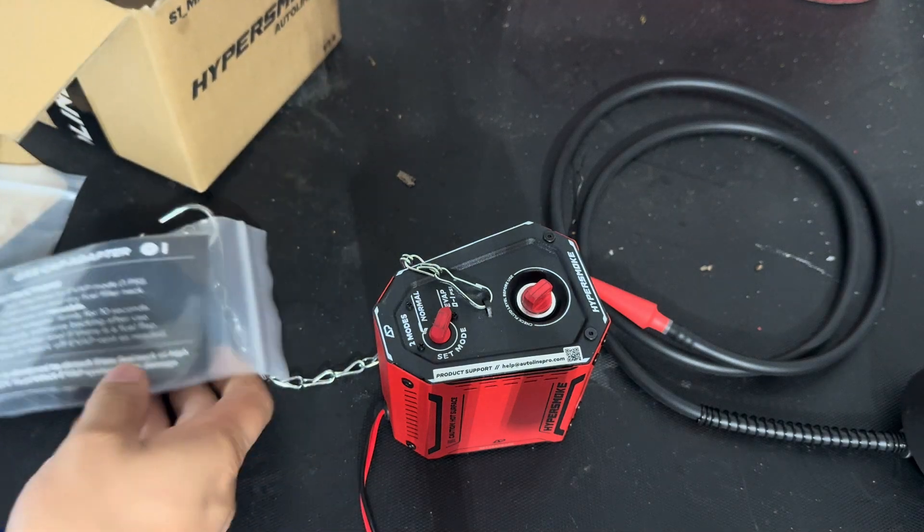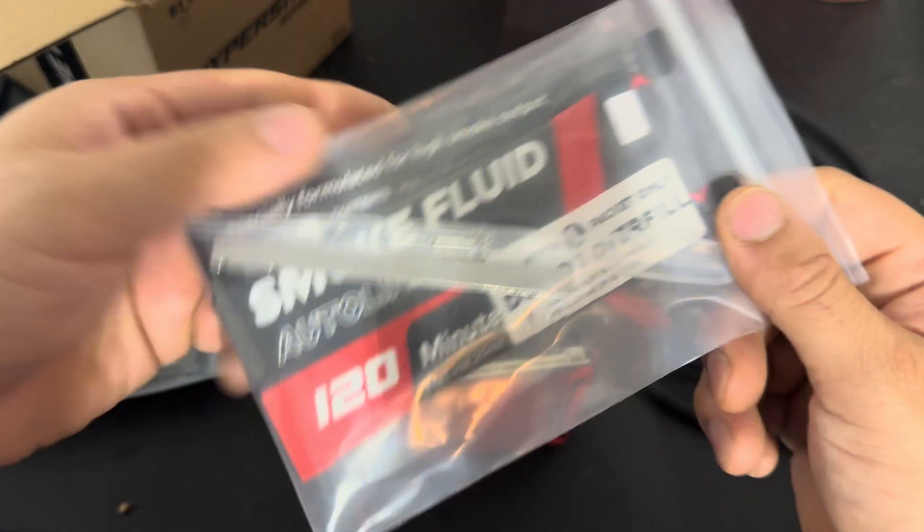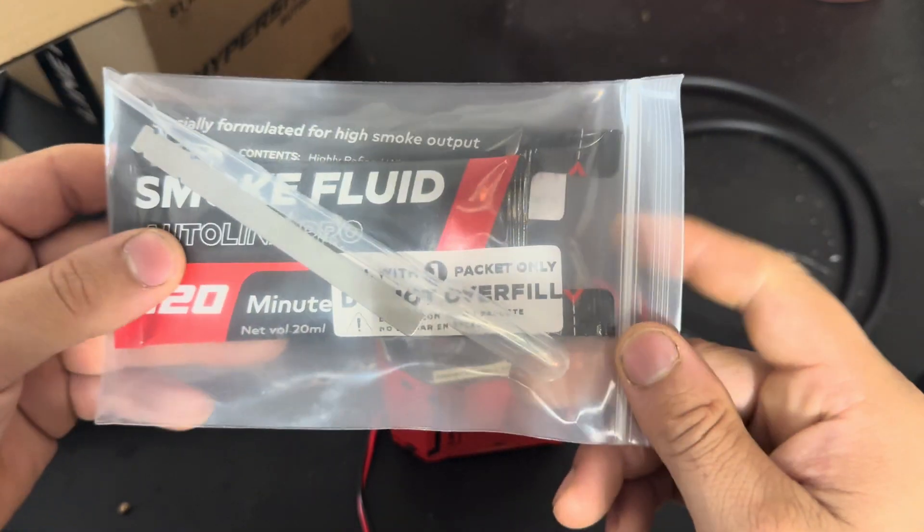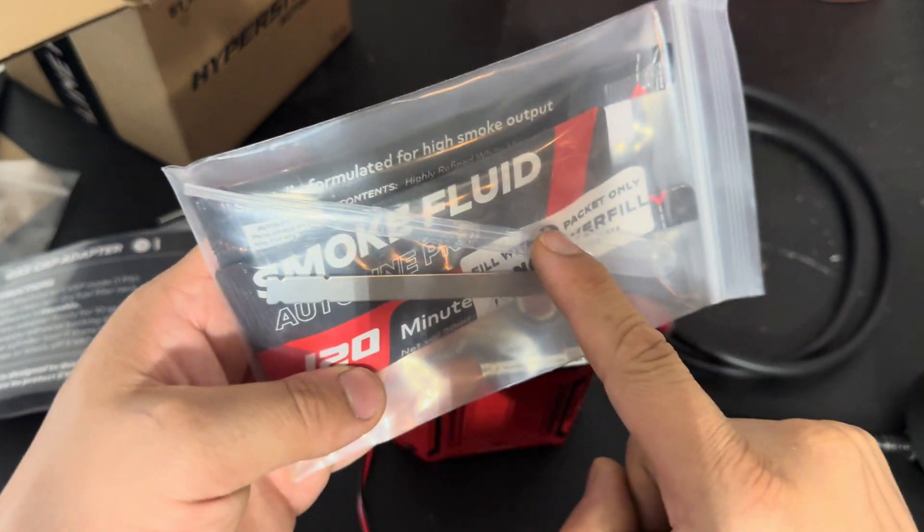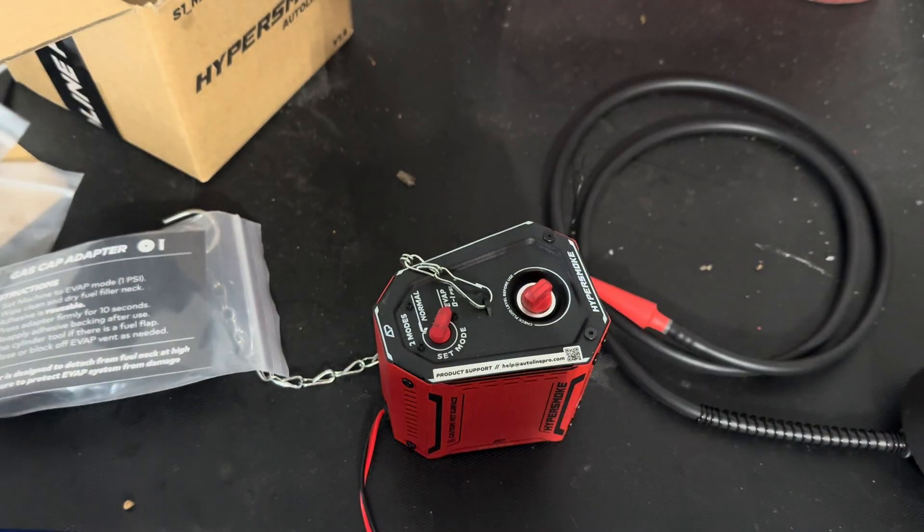What else we have in here? We have the smoke fluid, the oil, and we got like a little baster right here so you can suck it out if you overfill it. Dipstick right there.